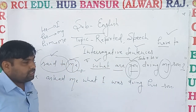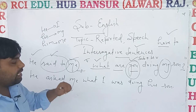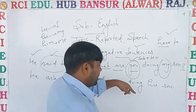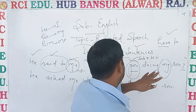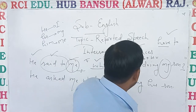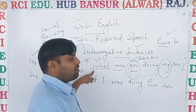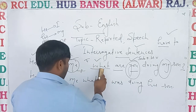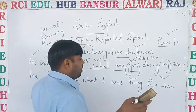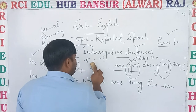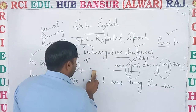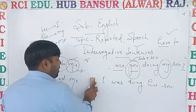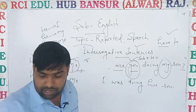So dear students, these are interrogative sentences. But if the sentence is interrogative and there is no WH-word, then we will use 'if' and 'whether'. If it is given — like 'Are you doing, my son?' — now it is an interrogative sentence but there is no WH-word. In such a condition, we will use 'if'.